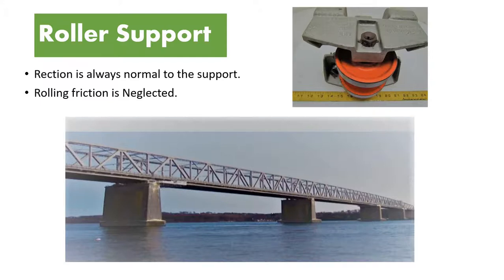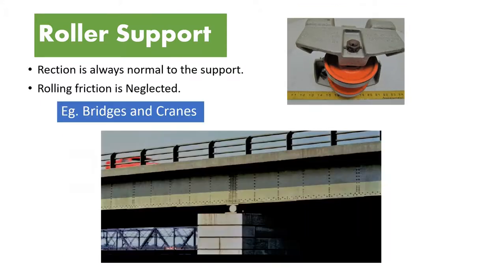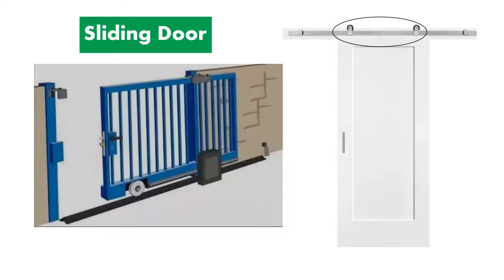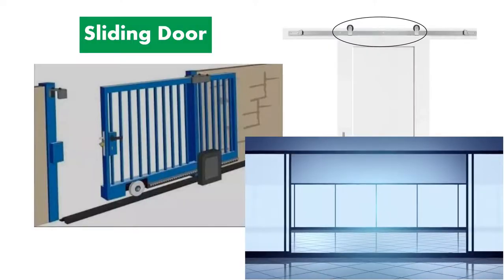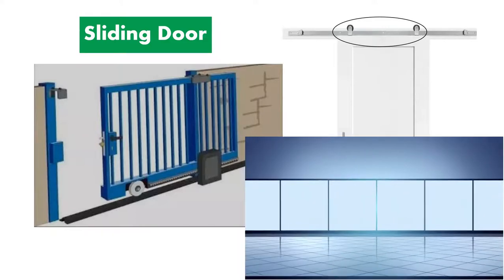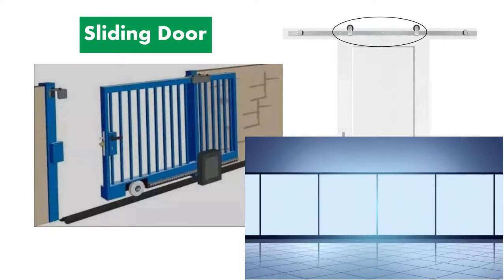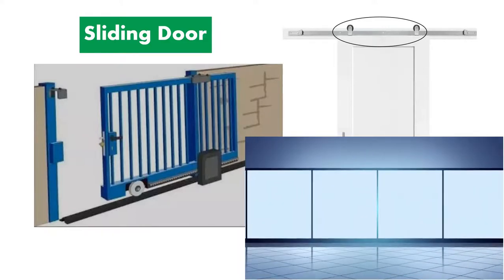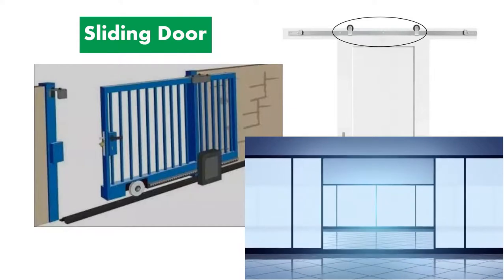Next is roller support. In this also the reaction is always normal to the support, but the rolling friction is neglected. Roller support is mainly seen in bridges and crane structures. A good example to understand how roller support works is a sliding door — every time we push the door, the support allows it to move horizontally and it rotates, but it does not move vertically, meaning the vertical load is resisted.